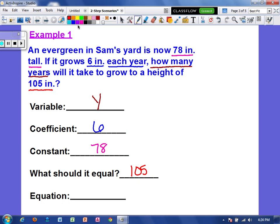So now I'm just going to write all of that out in an equation. So I have a coefficient of 6 and a variable of y. That would be 6y. My constant is 78. And that's going to, and we're adding that 78 because it's already 78 inches tall. So 6y plus 78, and that should equal 105. So 6 inches per year plus the 78 inches that's already there should equal 105.